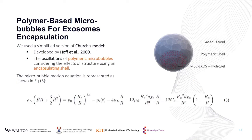With that in mind, we were able to use the simplified version of Church's model, developed by Hoff, to model the oscillations of the polymeric microbubbles, considering the effects of structure using an encapsulated shell, as shown in equation 5. This equation takes into account the properties of the surrounding liquid where the microbubble is inserted, the properties of the microbubble, the applied acoustic pressure, and the radius of the microbubble.